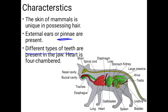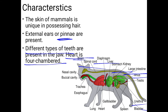External ears are present with pinnae — soft cartilage bones. Different types of teeth are present in the mouth. The heart is four-chambered. All major organs are present: brain, spinal cord, diaphragm, liver, stomach, kidney, large intestine, anus, urethra, bladder, spleen, gallbladder, lungs, trachea, esophagus, nasal cavity, and buccal cavity — the complete digestive and respiratory systems.